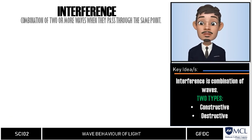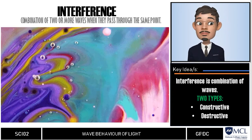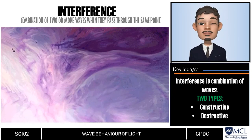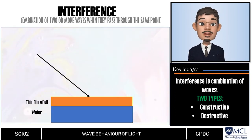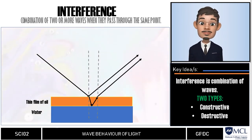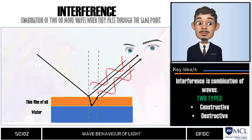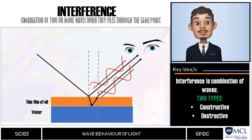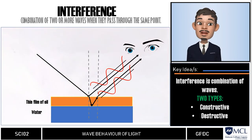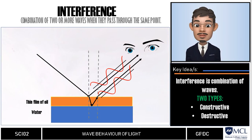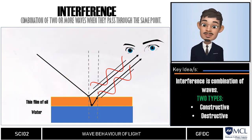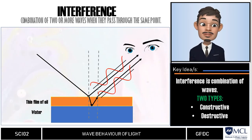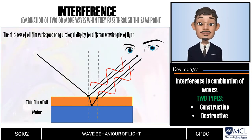All of us have probably seen some colorful display in oil films or soap bubbles. This display of colors can be explained by interference. When light strikes the oil surface or the surface of the bubble, and the reflected rays from the top and bottom surfaces of the oil are in phase, constructive interference occurs, and we will see a color of light for a certain angle and film thickness. When the reflected rays are out of phase, destructive interference occurs, and this area appears dark. Because the thickness of this oil film varies, a colorful display is seen for different wavelengths of light.